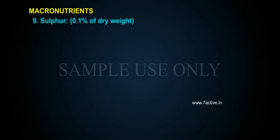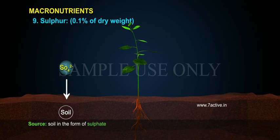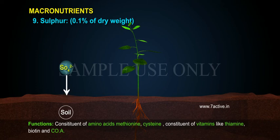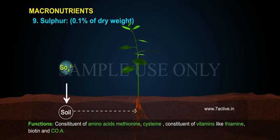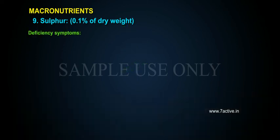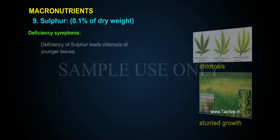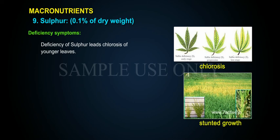Sulphur constitutes 0.1% of dry weight. Source: soil, in the form of sulfate. Functions: It is a constituent of amino acids such as methionine and cysteine. It is a constituent of vitamins like thiamine, biotin, and CoA. Deficiency Symptoms: Deficiency of sulfur leads to chlorosis of younger leaves.